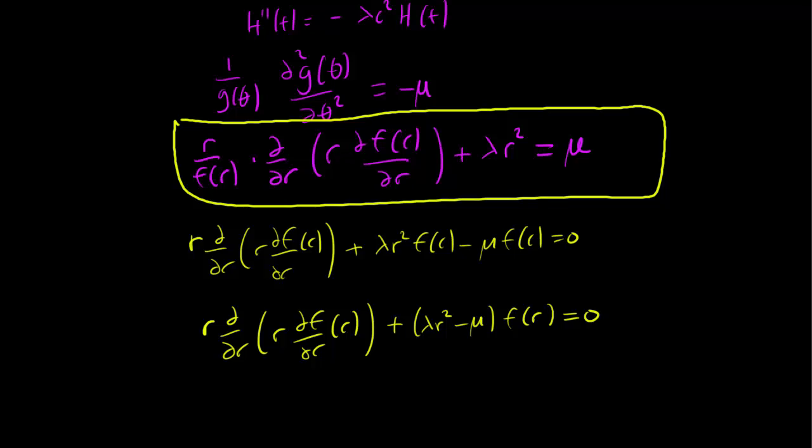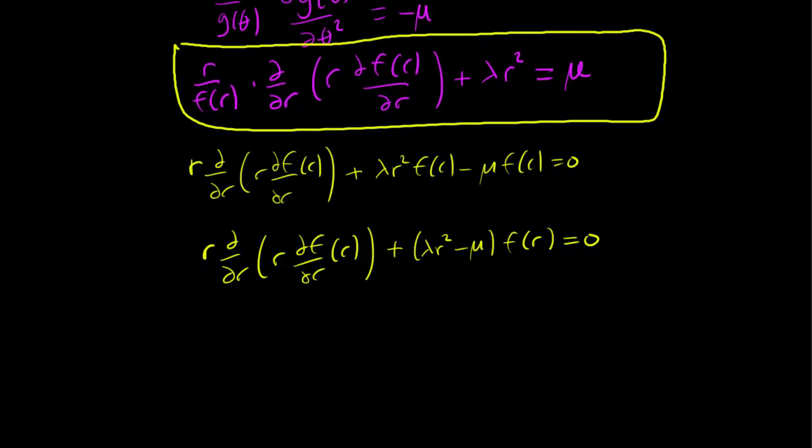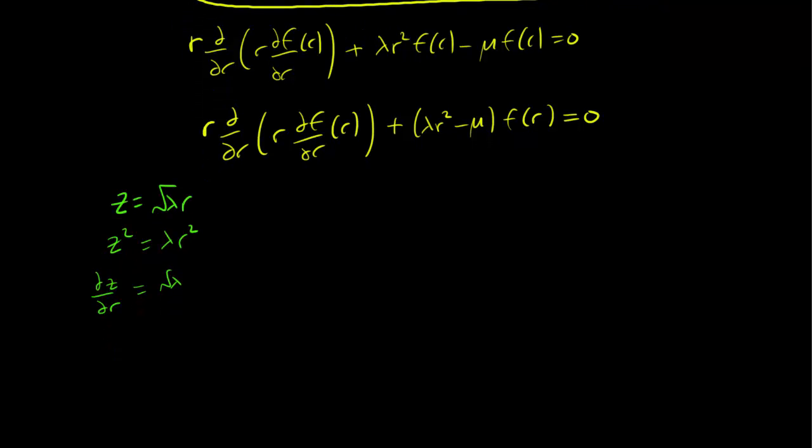Now we want to rewrite this equation to remove the lambda dependence. There's a way to change variables to eliminate the lambdas. Let z = √λ r. In particular, z² = λr², and ∂z/∂r = √λ.